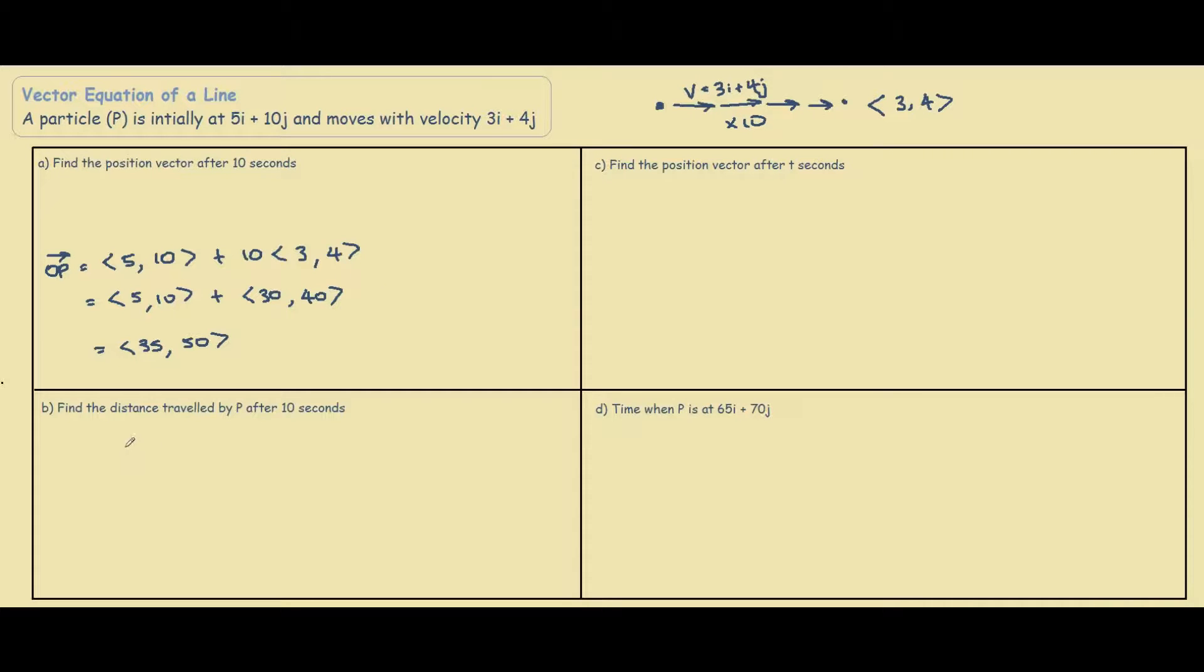Okay, let's move on to question B. Find the distance travelled by P after 10 seconds. To do this question, to find the distance, we do 10 times the velocity vector 3, 4, so this would equal to 30, 40 as the vector.